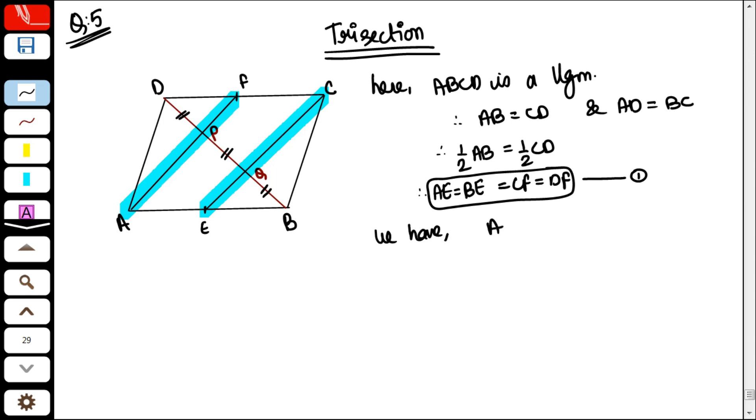Come on. We have, what has already been said: CF is parallel to AE and CF equal to AE from point 1. Therefore, AECF, what has it become?